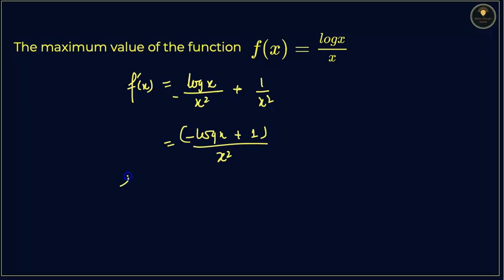Now you will find the value of f dash x that is equal to 0. You will write it as log of x is equal to 1, so you will get the value of x is equal to e to the power 1, that is equal to, this implies x is equal to e.